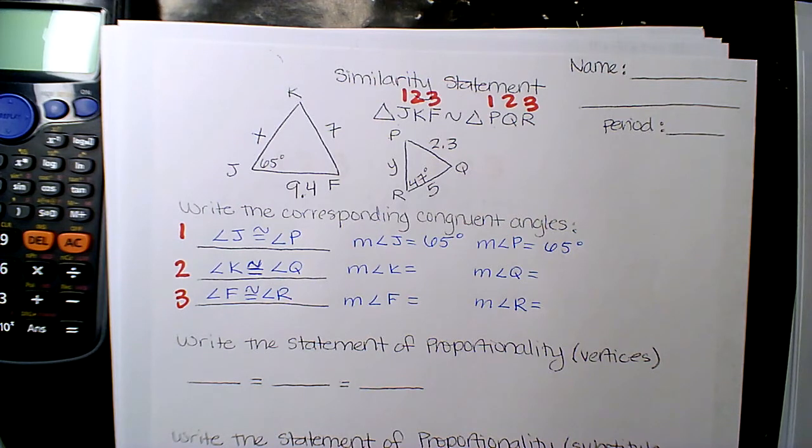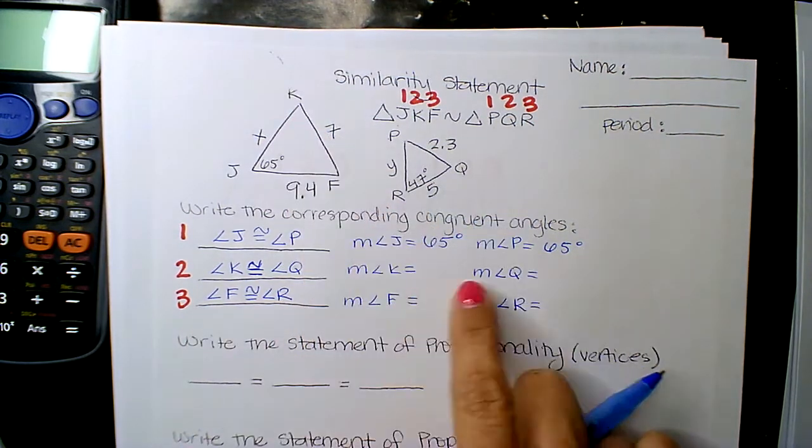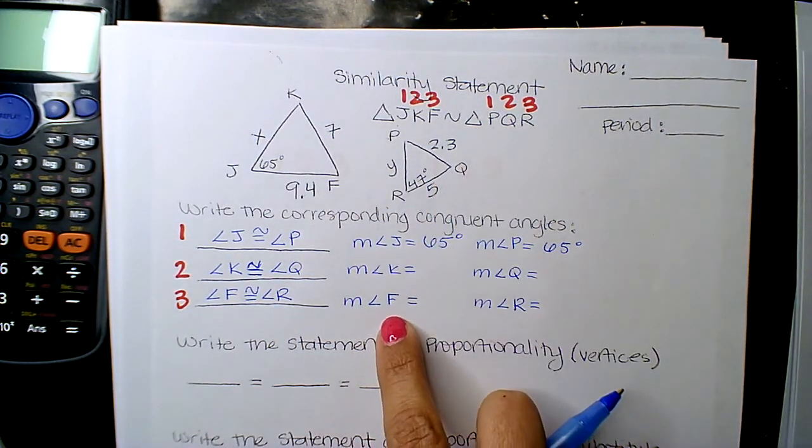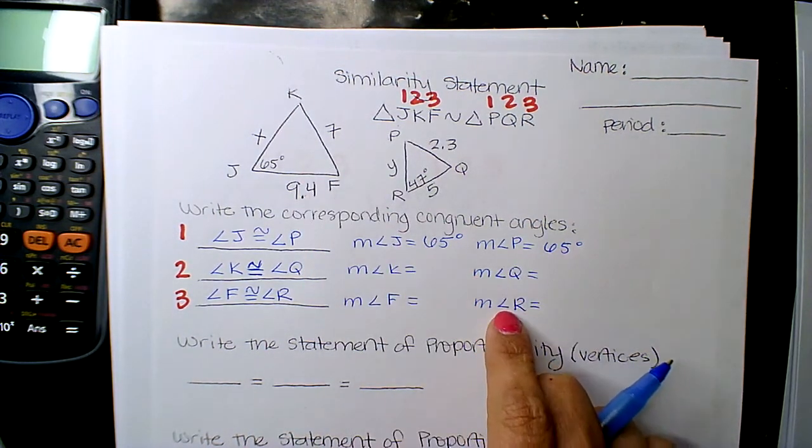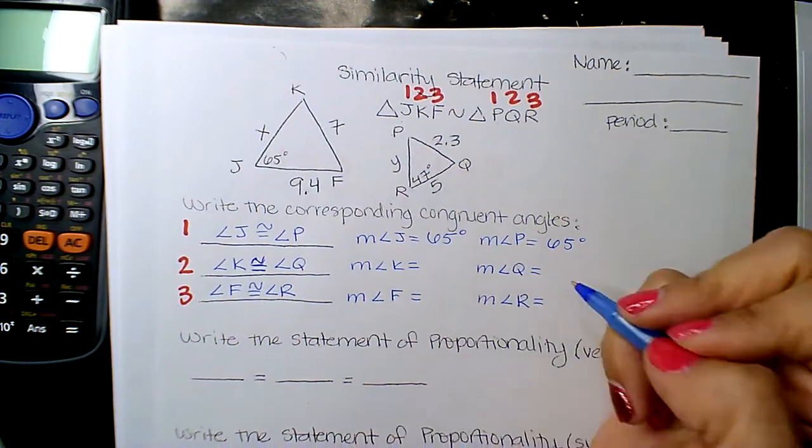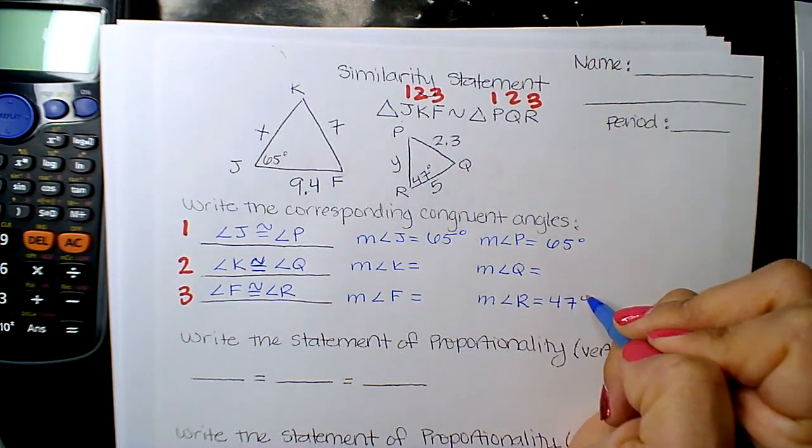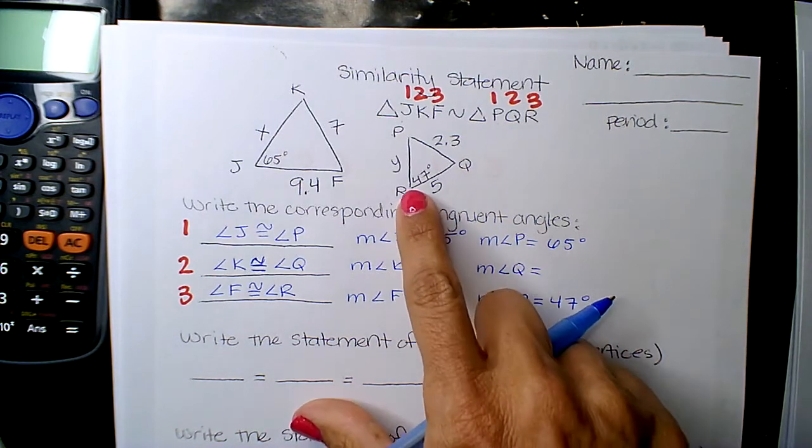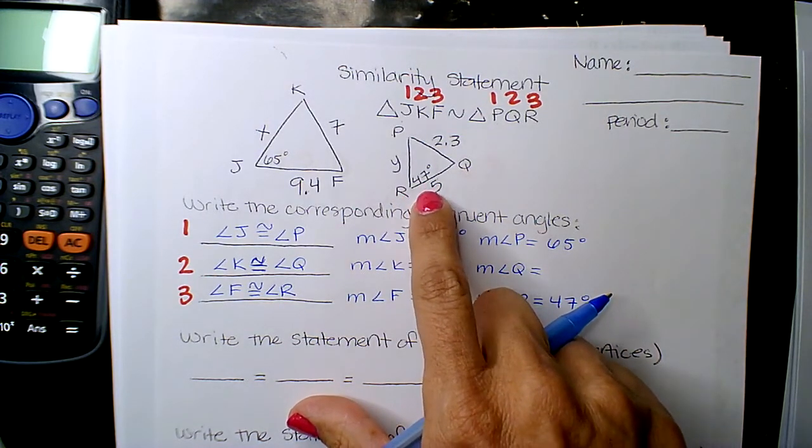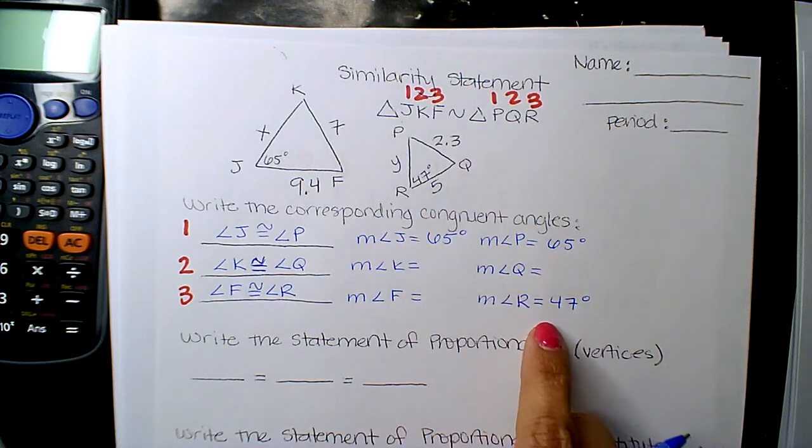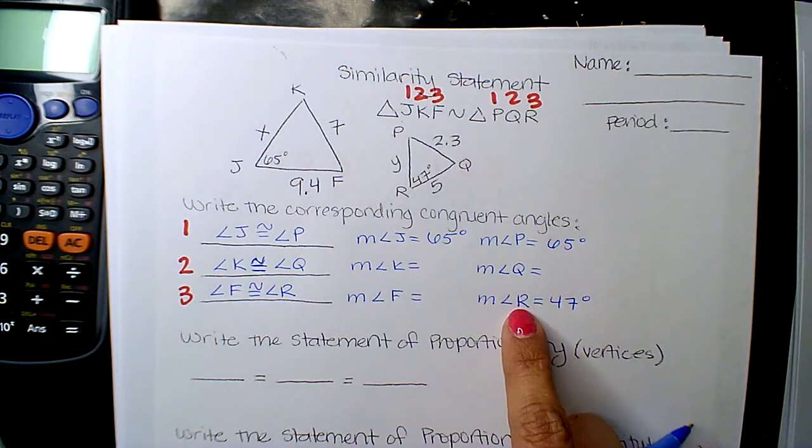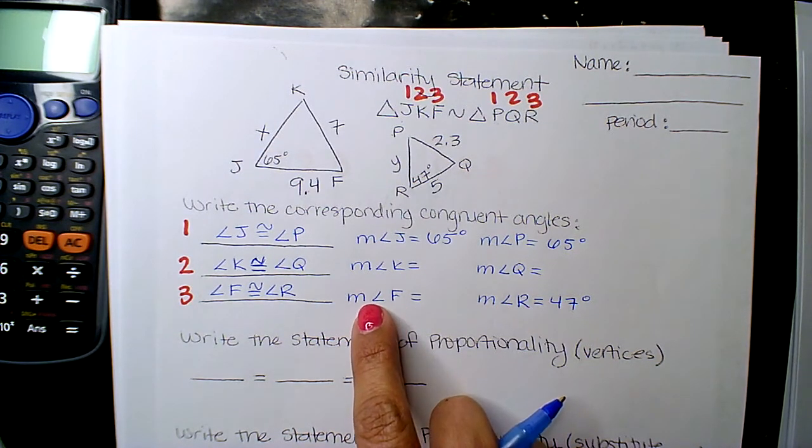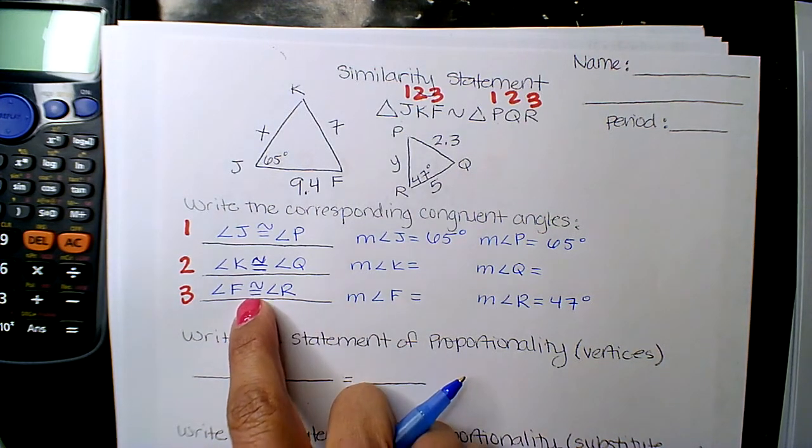Okay, if I look for K, K has nothing, Q has nothing. So, let me go to F. F has nothing, and R has 47. So, the next given is angle R is 47 degrees because it's right here, right? But, again, if I have angle R, the measure of angle R, I should have the measure of angle F, right? So, what's the measure of angle F if they're congruent? 47. 47.